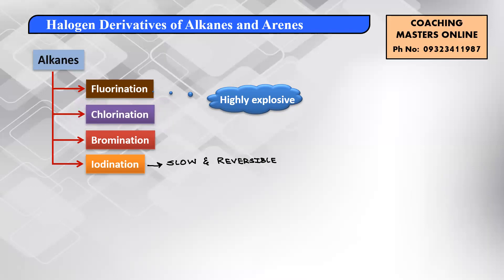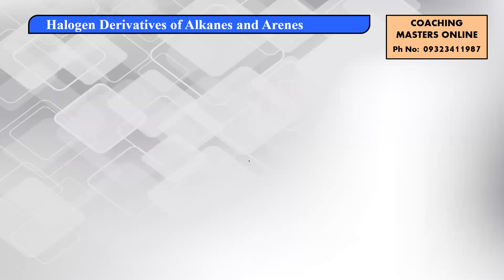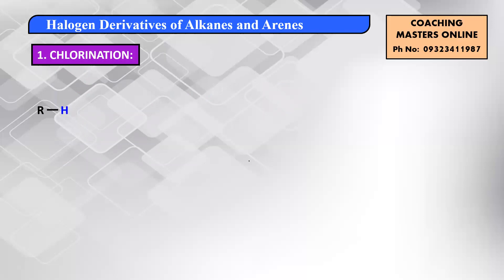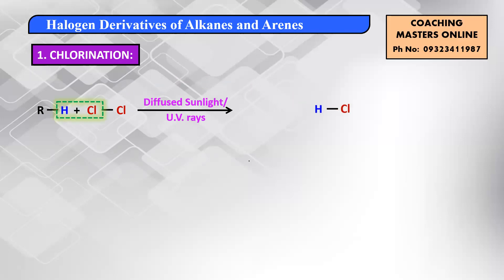Chlorination is substitution using a chlorine molecule. Let's see how the reaction occurs: you take an alkane RH and add Cl2 in the presence of diffuse sunlight, heat, or UV light. H and Cl combine to give HCl, and the remaining R combines with Cl to give the corresponding alkyl halide.